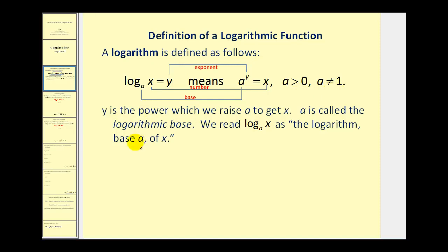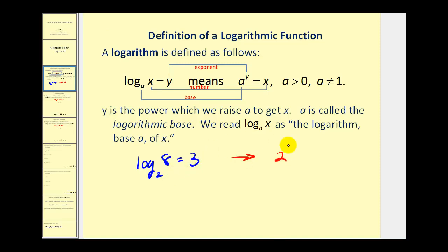So if we have log base 2 of 8 equals 3, this means 2 to the power of 3 equals 8. A nice way to remember that is just start with the base and kind of go around the circle: 2 to the power of 3 is equal to 8.